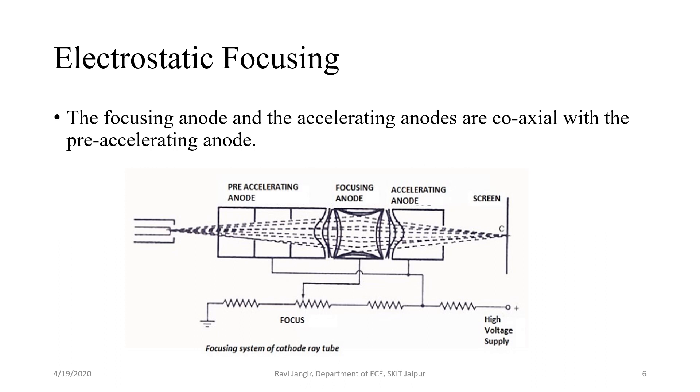So at the end of the electron gun assembly, we get a focused beam of electrons. Now we have to deflect this electron beam in vertical and horizontal direction to create an image on the CRT screen. And for that we use electrostatic deflection.